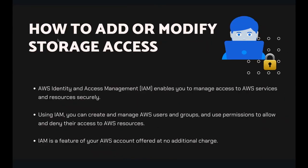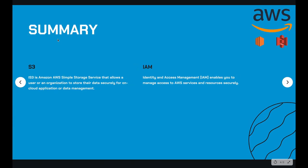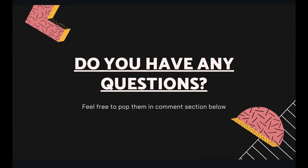That's it — hope you liked the video and understand the topics. Quick summary: S3 is the Simple Storage Service provided by Amazon on the cloud, which is highly scalable and extensible. IAM stands for Identity and Access Management, which enables you to manage access to all AWS services. If you have any questions, pop them in the comments below. If you liked the video, hit like, share, and subscribe — thank you!